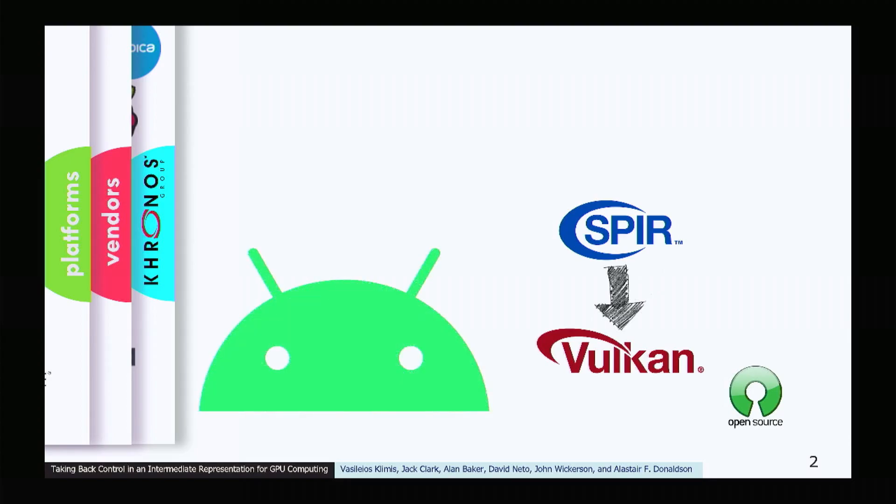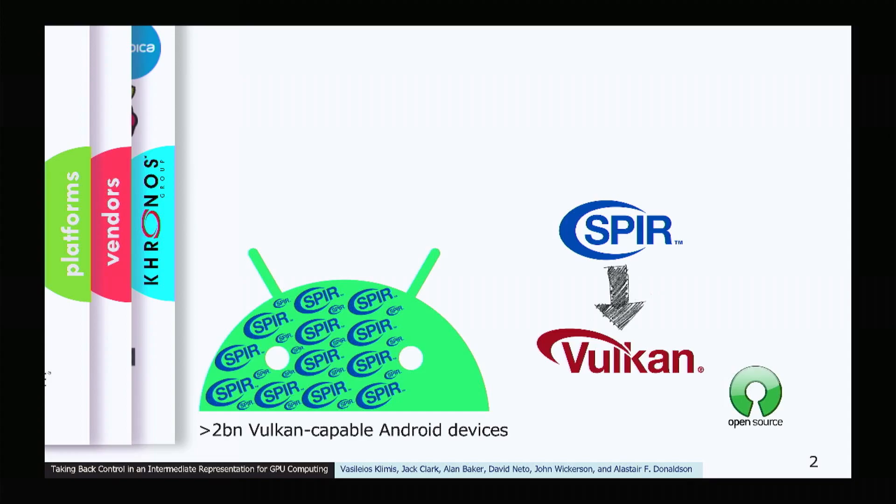The language we are talking about is called SPIR-V. SPIR-V is consumed by Vulkan GPU drivers. Vulkan is an open source application programming interface for rendering two-dimensional and three-dimensional vector graphics. SPIR-V and Vulkan are deployed in more than 2 billion Android devices. There are more than 3 billion active Android devices, 77% of which are SPIR-V capable.